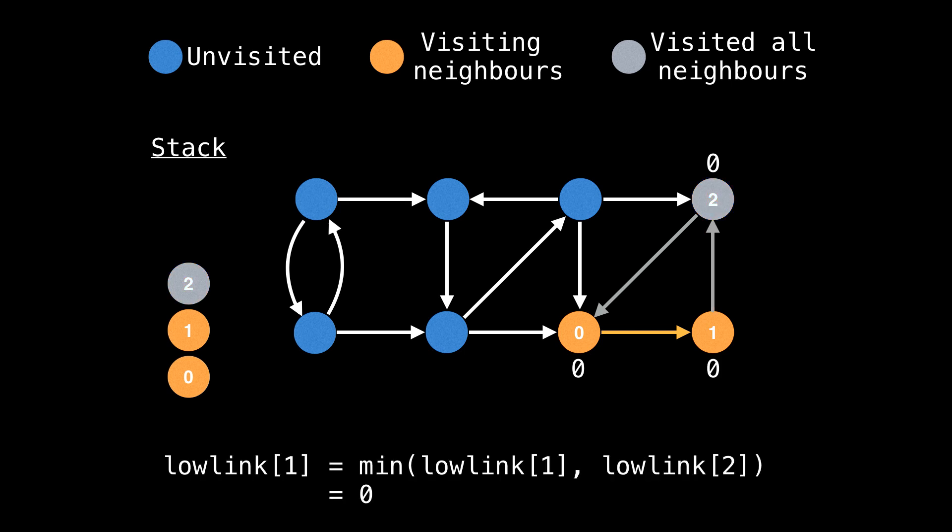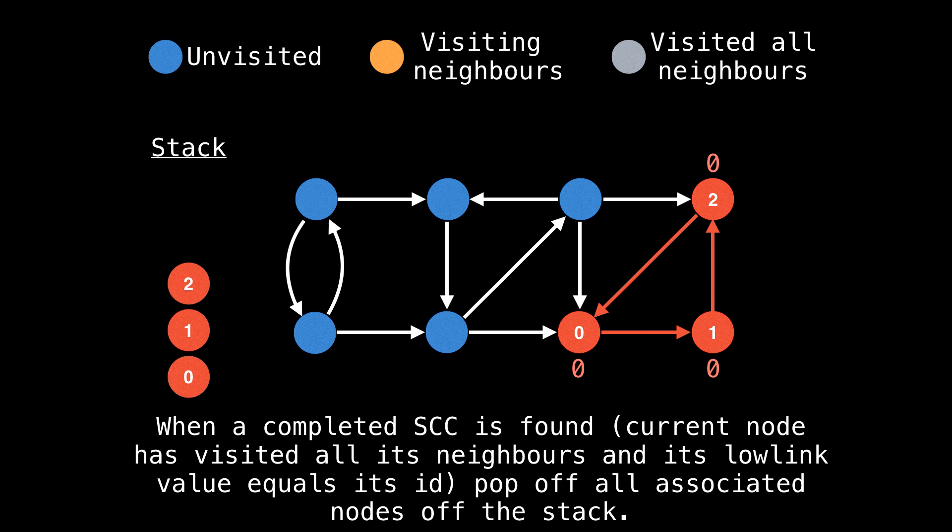Similarly, now min the low link value of node one with node two. And also the same for node zero. Upon returning back to node zero, we realized that we've actually finished a strongly connected component, since we visited all the neighbors of node zero and its ID is equal to its low link value. This means we need to remove all the nodes associated with the strongly connected component from the stack.